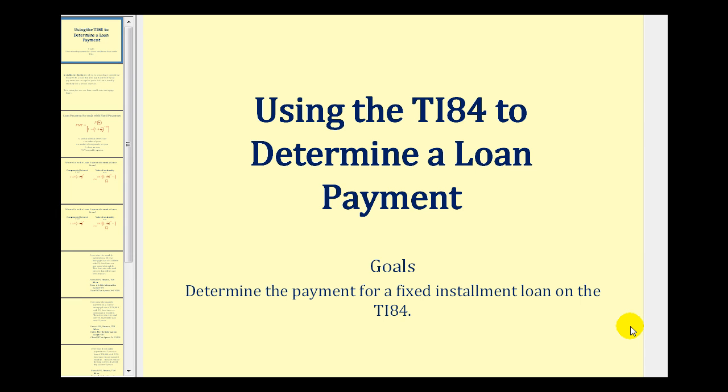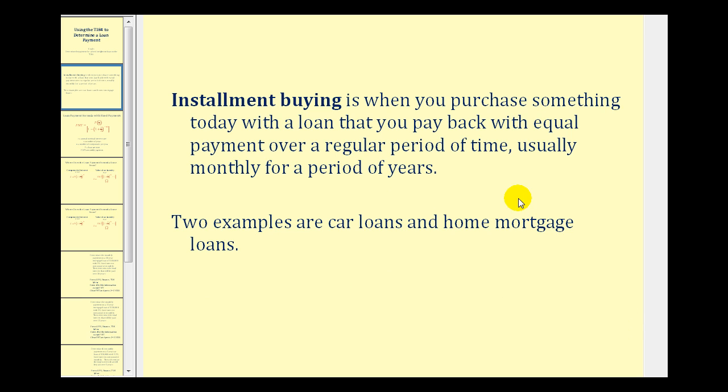Welcome to a lesson on using the TI-84 graphing calculator to determine a loan payment. The goal of the video is to determine the loan payment for a fixed installment loan on the TI-84. Installment buying is when you purchase something today with a loan that you pay back with equal payments over a regular period of time, usually monthly, over a period of years. The two most common examples would be a car loan and a home mortgage loan.